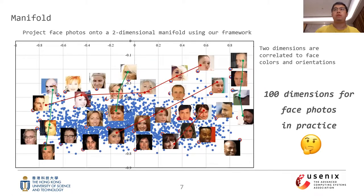The same conclusion also holds for real images like face photos. Here we project some face photos onto a two-dimensional manifold using our framework. While there are only two dimensions, they can distinguish different faces and are correlated with face color and face orientations. In practice, we find that about 100 dimensions are enough for face photos, regardless of the image size.